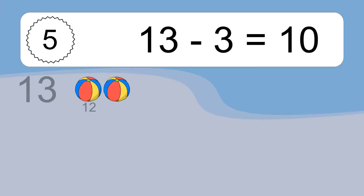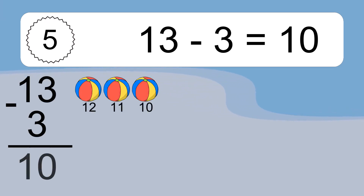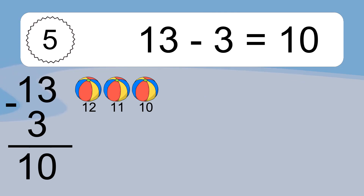13 minus 3 equals what? 13 minus 3 equals 10. Let's count it: 12, 11, 10.